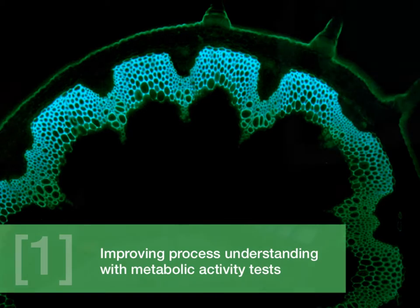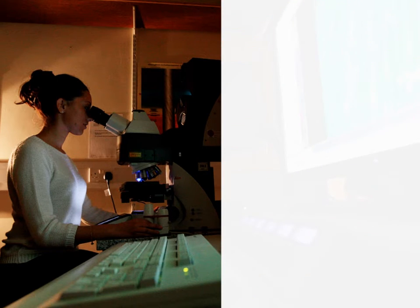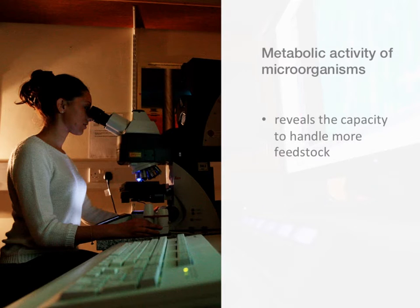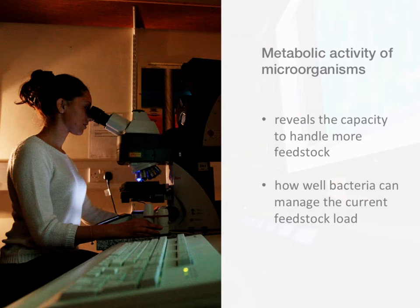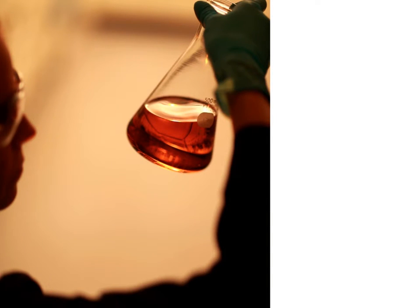Perhaps one of the most important aspects of the AD process is the metabolic activity of the microorganisms. Information about this parameter reveals the capacity of the process to handle more feedstock, or how well the bacteria involved will be able to manage the current feedstock load. Monitoring of this parameter is relatively rare in most biogas plants today, which severely limits the plant's ability to efficiently operate the process.